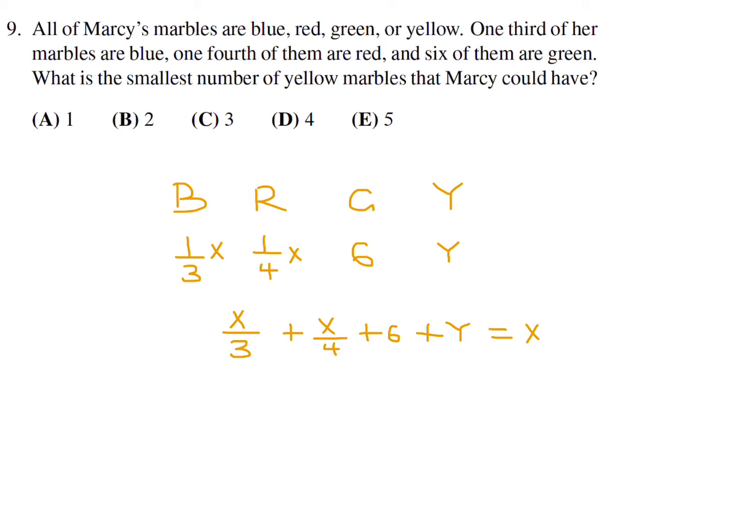So if you do this math, you get Y is equal to 5X over 12 minus 6. So now we have to experiment here. If Y is, of course, representing the number of yellow marbles, it has to be an integer. And so does X, because that's the total number of marbles.